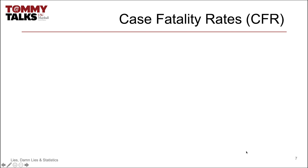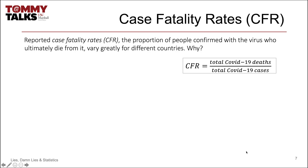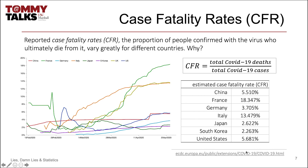Let's assess one more measure before diving into the various pieces. The case fatality rate, or CFR, calculates the proportion of people confirmed with the virus who actually die from it. Notice once again the large differences between the values for these countries. France has the highest CFR at just over 18%, and South Korea has the lowest at just over 2%. Are these countries so drastically different that their rates could vary by almost 16%?